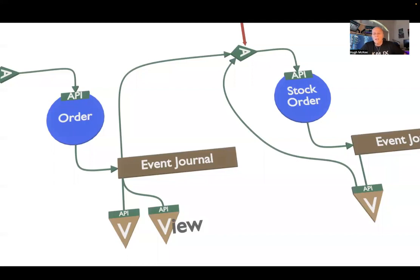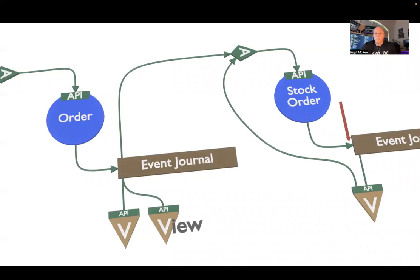What happens is: an action receives the checkout event from the shopping cart. The action then sends a command to create a new Order entity. When it's created, it emits an event like 'order created,' which gets written into the Order's event journal. That event is picked up by another action in the center, which is responsible for taking that order and getting stock. This is where things started to get interesting, because an order could have multiple stock items — SKUs — that we need stock for.